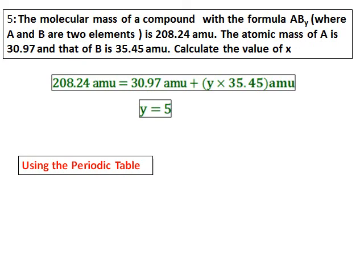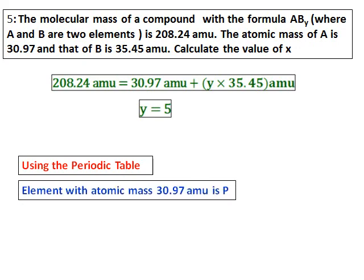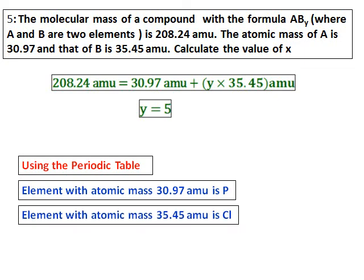To identify the compound, we use the periodic table. The element with atomic mass 30.97 is phosphorus (P), and 35.45 belongs to chlorine (Cl). Therefore the compound is PCl5, because the value of y came as 5 in the previous calculation.